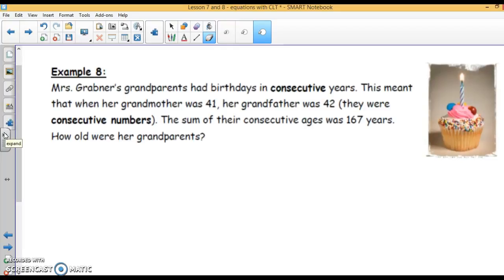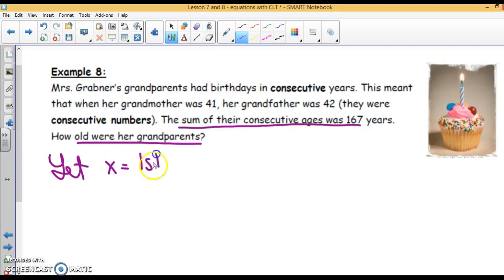It said Mrs. Grabner's grandparents' birthdays are in consecutive years. It meant that when her grandmother was 41 and her grandfather was 42, they are consecutive numbers. It said the sum of their consecutive ages is 167. How old were her grandparents? Well, we don't know. So let's let x equal first grandparent. And we've got our second grandparent. They said they were consecutive years. So if the first one is x, the second one will be x plus 1. They are separated by 1. We've defined our variable.